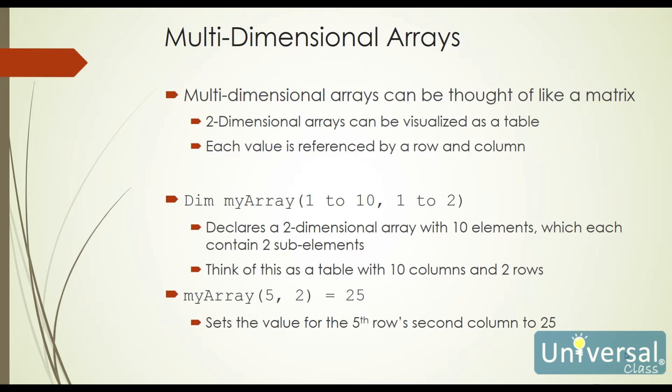Arrays are a lot easier if you think of them like a matrix — a two-dimensional table. Just like in Excel, we have columns and rows. A one-dimensional array is like having just the A column with all of its rows, where however many elements we have are our individual rows. We can also have what are called multi-dimensional arrays, which can be thought of like a matrix similar to a two-dimensional table. Each value is going to be referenced by a row and a column — not technically rows and columns, but that's how we visualize them.